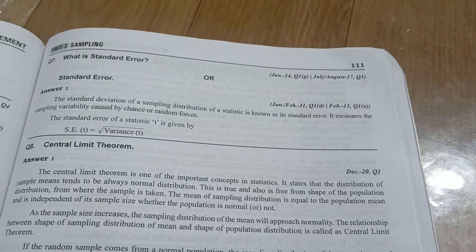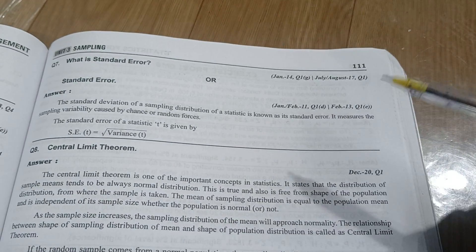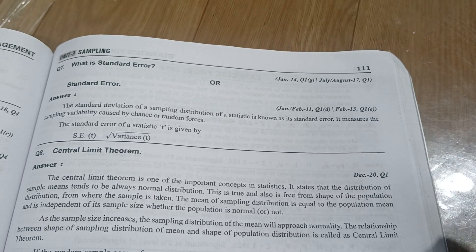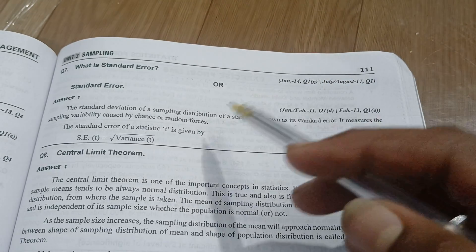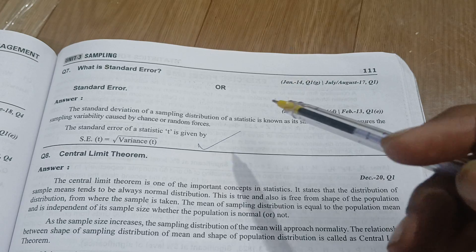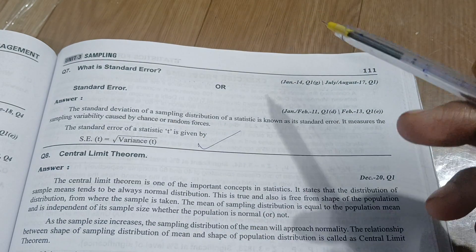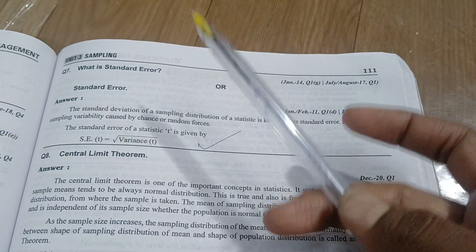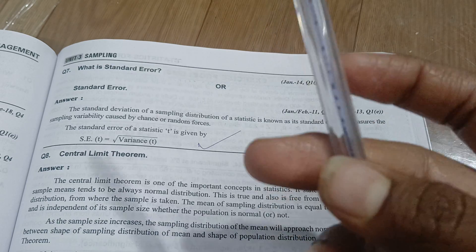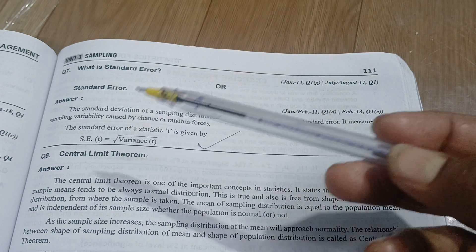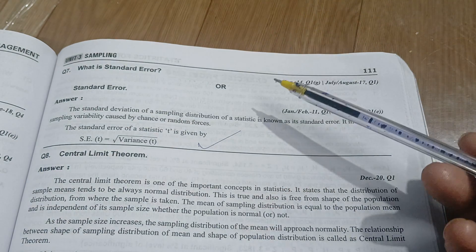Next, you are having standard error. Standard error of a sampling distribution is also known as standard error. You need to remember this formula: square root of variance divided by n. This is the standard error. When there are chance or random forces, that type of thing is called standard error.